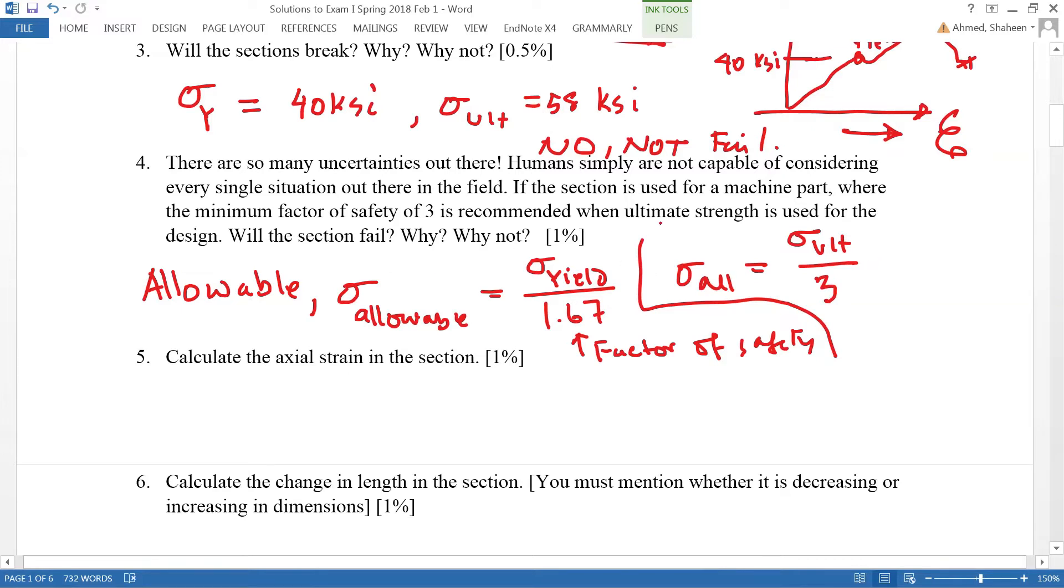In this case it says to use the ultimate strength, which is 58 KSI. So if we do 58 KSI divided by 3, let's calculate it: divided by 3 is 19.33 KSI.